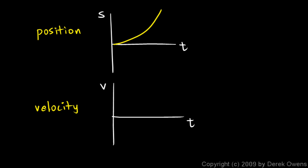That means the v graph has to start off at zero, because the slope right here is zero, so the value of my v graph is going to be zero. Then the slope gradually gets steeper and steeper, so my v graph is going to gradually get higher and higher. It turns out that if this is an x-squared graph — a parabola — then this will be something like y equals x or some constant times x: a straight line. These will always differ in degree by one. This is a degree-two function; this is a degree-one function.